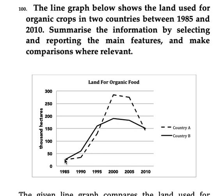From 1985 to 1995, the land used in country B is more, but there is growth in both countries till the year 2000. After that, the land used for organic farming falls in both countries. By looking at this much, you can make an overview, and then we will try writing this graph.